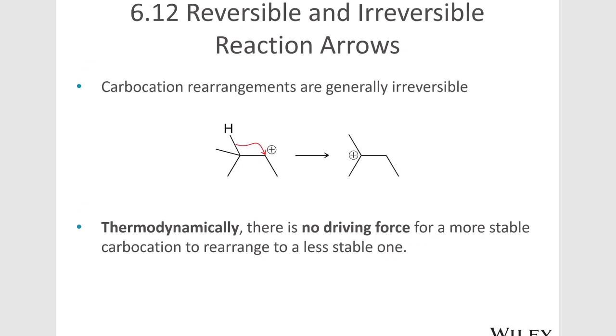Carbocation rearrangements are going to be irreversible because there's no driving force for a more stable carbocation to rearrange to a less stable one. So we see that we only have a one-way arrow here.